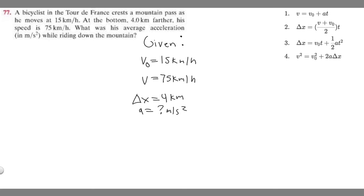So let's go ahead and solve for it. So v squared, which is going to be 75 squared, right, we're just plugging in v. 75 squared equals v sub 0 squared, which is 15 squared, plus 2 times a.